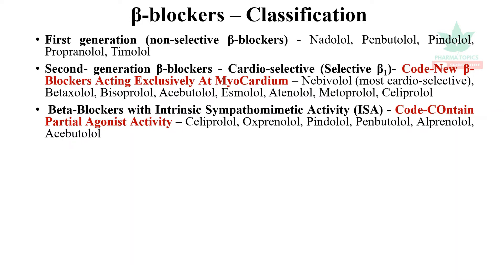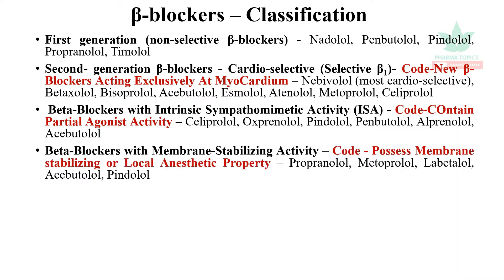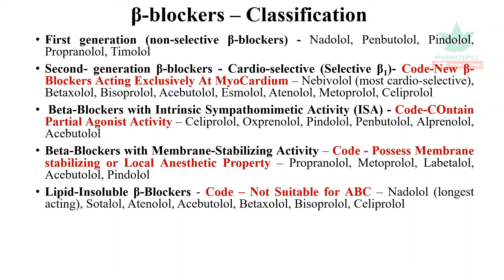Beta blockers with intrinsic sympathomimetic activity, also called partial agonists — remember the code: contain partial agonist activity — celiprolol, oxprenolol, pindolol, penbutolol, alprenolol, and acebutolol. Beta blockers with membrane stabilizing activity — remember the code: possess membrane stabilizing or local anesthetic activity — propranolol, metoprolol, acebutolol, acebutolol, and pindolol.